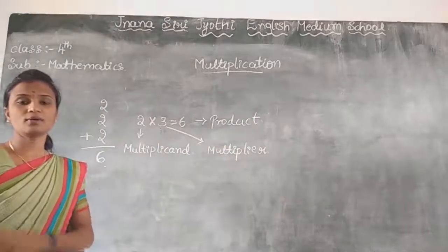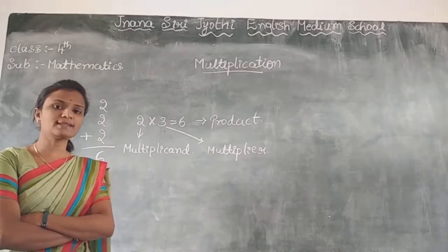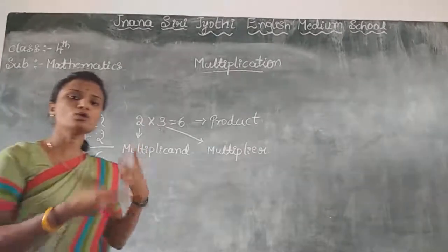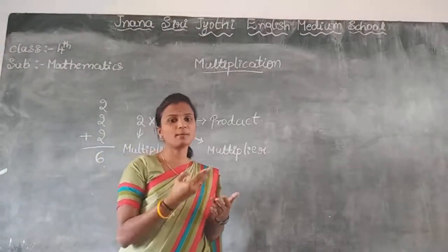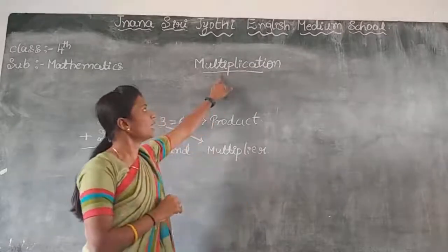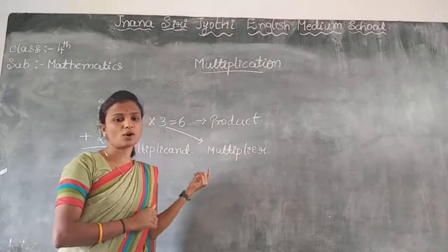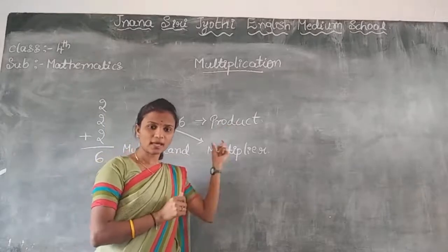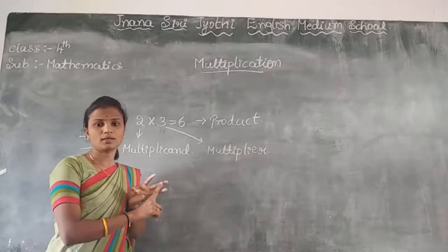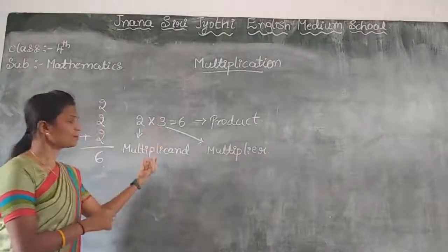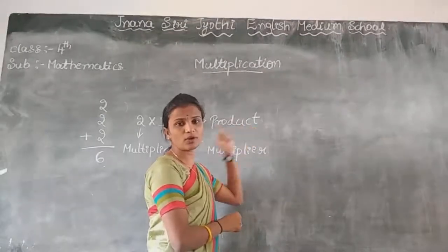In Addition, when you get the answer, it is called the Sum, because you are adding those two or three numbers. But in Multiplication, the answer is called the Product. So in Multiplication there are three parts: the Multiplicand, the Multiplier, and the Product.